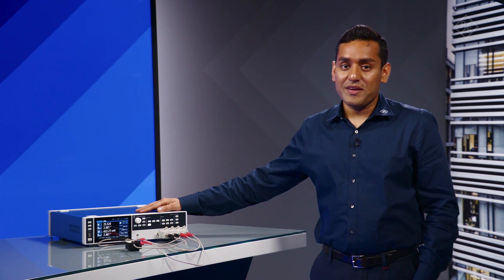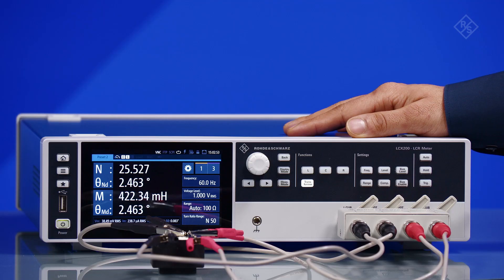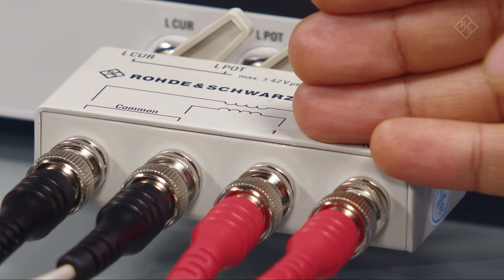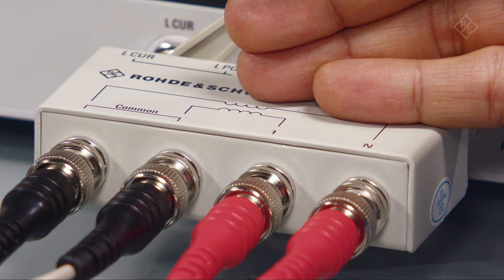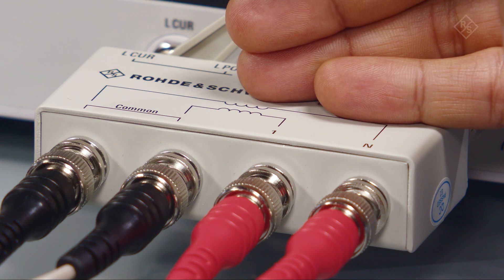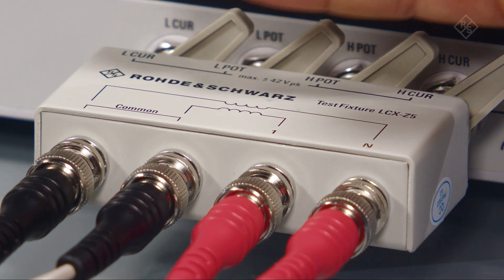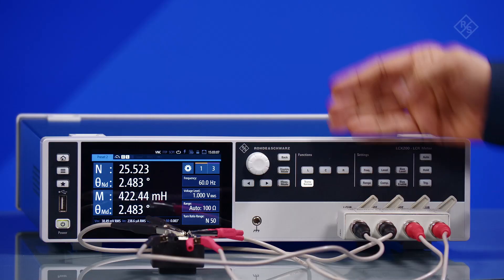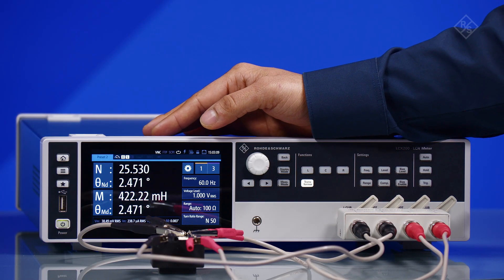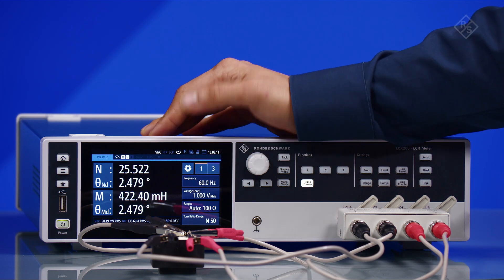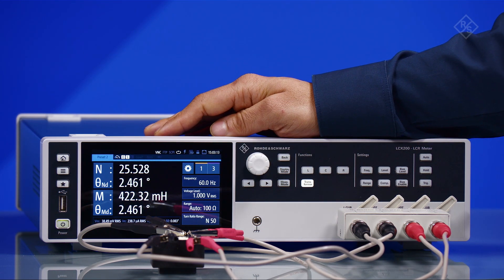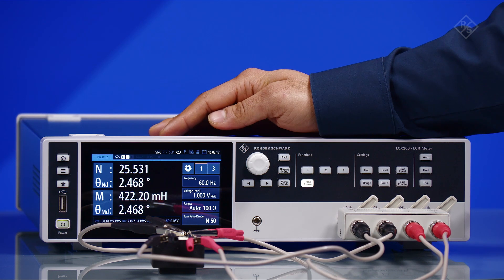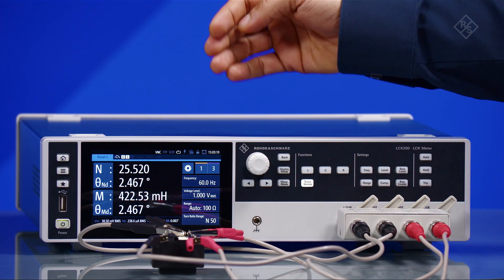Before starting the measurement, please make sure that the test leads with the red alligator clips are connected to the N and 1 connections, and the test leads with the black clips are connected to the outer and the inner common connectors. Set the operating frequency to the desired main frequency of the transformer, which is 60 Hz in our case. Set the test signal level to one volt and the impedance range to auto.